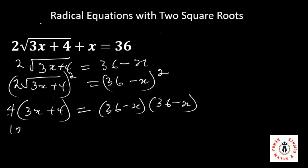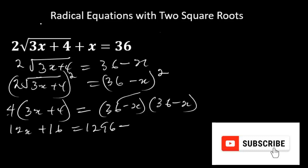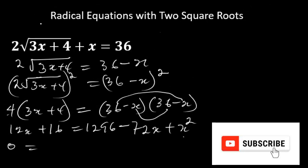So 4 times 3x plus 4 gives 12x plus 16. Expanding the right side, 36 minus x into 36 minus x: 36 times 36 is 1296, minus 36x minus 36x gives minus 72x, and x times x gives plus x squared. Moving all terms to the right-hand side: 1296 minus 16 is 1280, minus 72x minus 12x gives minus 84x, plus x squared.